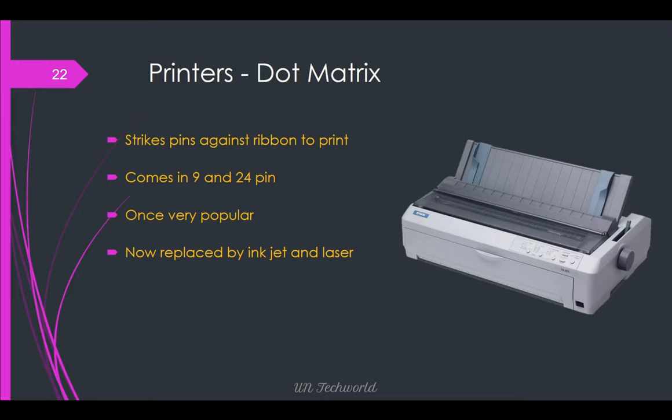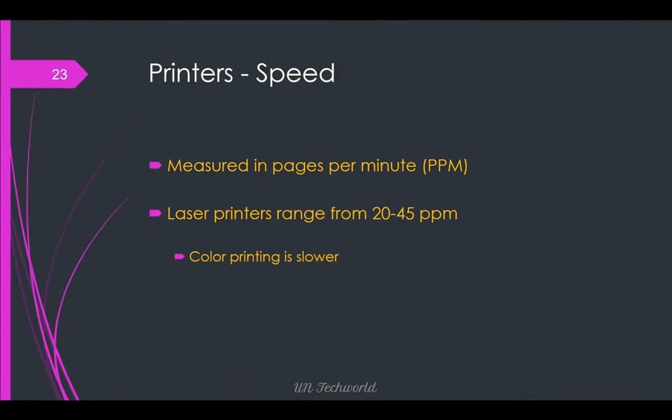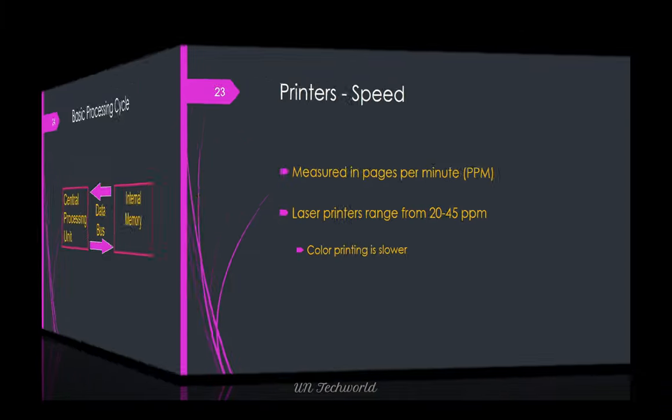Dot matrix printers strike pins against a ribbon to print, come in 9 and 24 pin models, and were once very popular but are now replaced by inkjet and laser printers. Laser printers are measured by pages per minute, ranging from 20 to 45 pages per minute. Color printing is easy but slower. Dot matrix print speed is not measured in pages per minute.